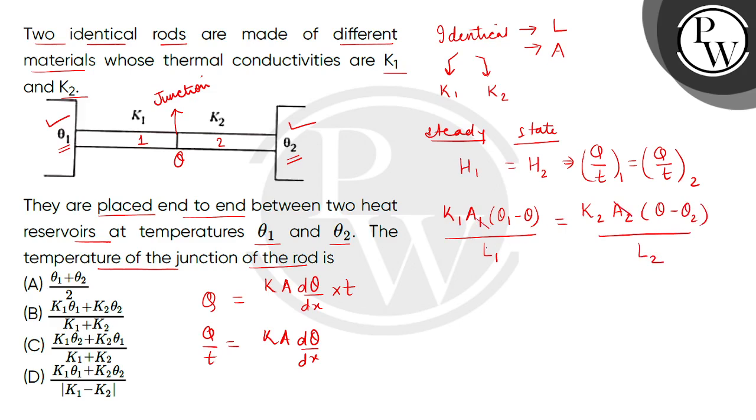Because the areas and lengths are the same for both rods, we will remove Theta. So this is K1 Theta1 minus K1 Theta equals K2 Theta minus K2 Theta2. We get K1 plus K2 outside the bracket times Theta, and this equals K1 Theta1 plus K2 Theta2.